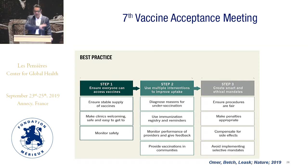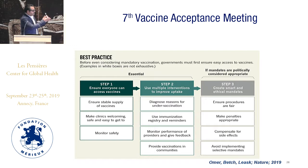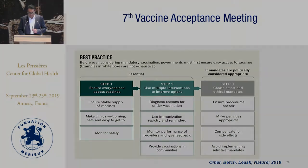If you create these requirements, ensure procedures are fair. Make penalties appropriate — the rich should not be able to buy out of complying with the social requirement. Compensate for side effects; I'm a big proponent of a no-fault injury compensation program. And avoid implementing selective mandates. Some of these things are essential even before you design an appropriate ethical and pragmatic policy, and some can happen concurrently.